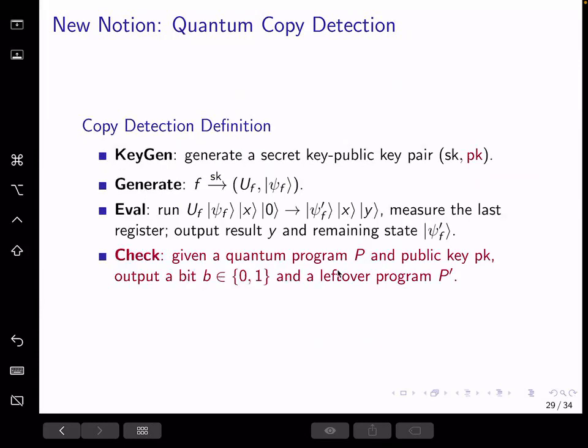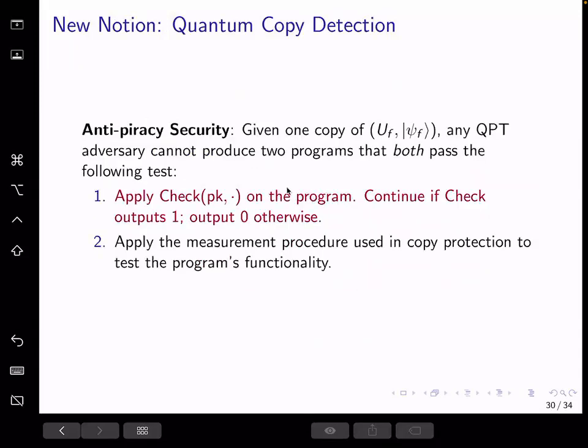More specifically, we have an additional algorithm called check and additional generation of public key corresponding to the secret key we generated for the copy protection. The check algorithm takes in the public key and the claimed program and outputs a bit indicating whether the program has passed this validity check. Finally, the anti-piracy security is just adding this check procedure to testing of the pirate programs. We first apply check using the public key on the program and then proceed to test its functionality if and only if the program has first passed the check.